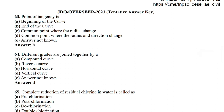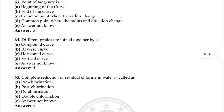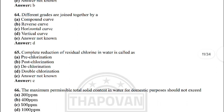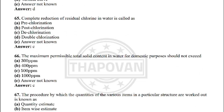Next: point of tangency is — the correct answer is option B: end of the curve. Next: different grades are joined together by — option D: vertical curve.